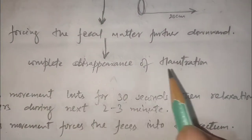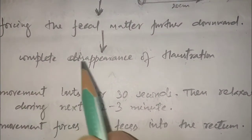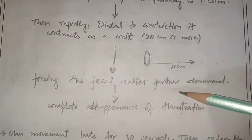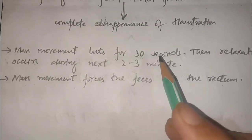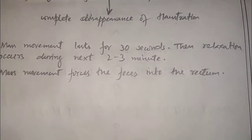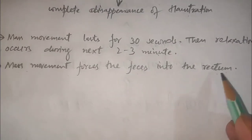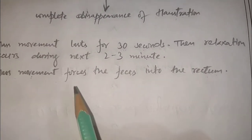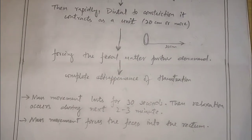This mass movement results in complete disappearance of haustration. Mass movement lasts for 30 seconds, then relaxation occurs during the next 2 to 3 minutes. The main function of mass movement in the large intestine is that it forces the feces into the rectum. This was all about the movements of colon — thank you for watching.